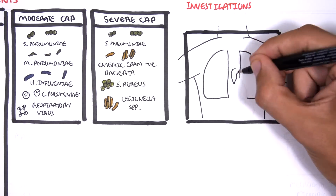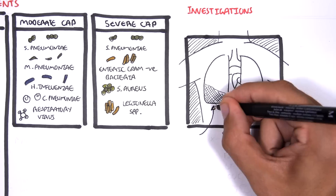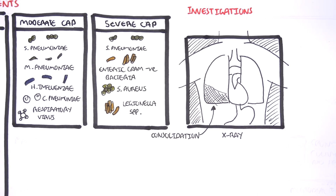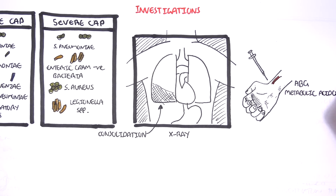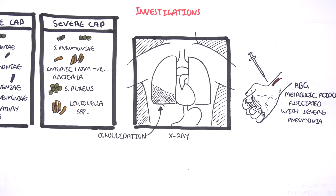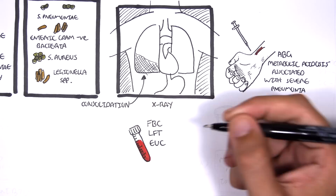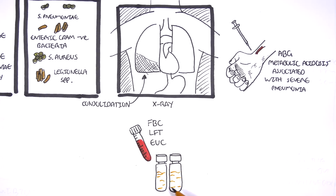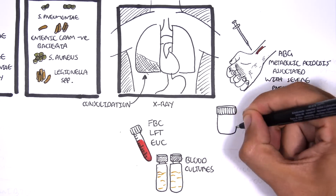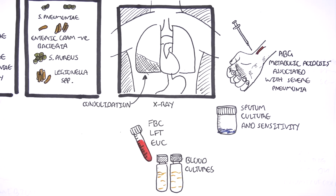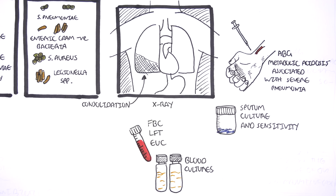Investigations for community-acquired pneumonia include chest x-ray, which may reveal consolidation in one of the lobes, bronchopneumonia, or nothing at all. Mycoplasma pneumoniae often shows bilateral hilar consolidation. Performing an ABG is important to check for metabolic acidosis, as acidosis is associated with severe pneumonia. Serology tests include FBC, liver function tests, and electrolytes/urea/creatinine. Blood cultures and sputum cultures and sensitivity are useful to identify the bacteria and antibiotic susceptibility.